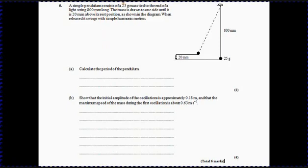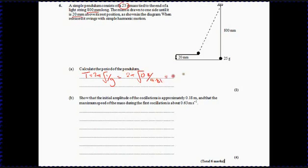Last question: a 25-gram pendulum with an 800 mm string is drawn to one side and raised by 20 mm. First, calculate the period: t = 2π√(l/g) = 2π√(0.8/9.81), giving a period of 1.79 seconds — nice easy marks. The harder part is showing that the initial amplitude is 0.18 meters.